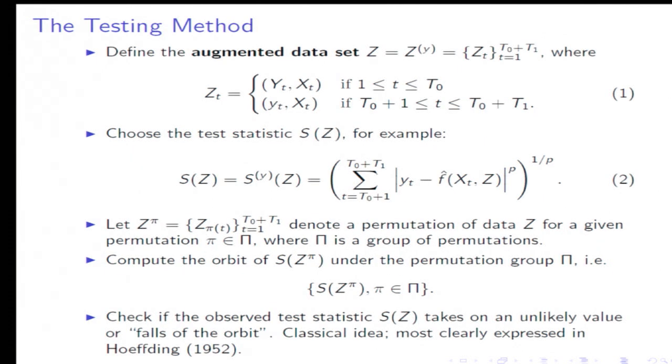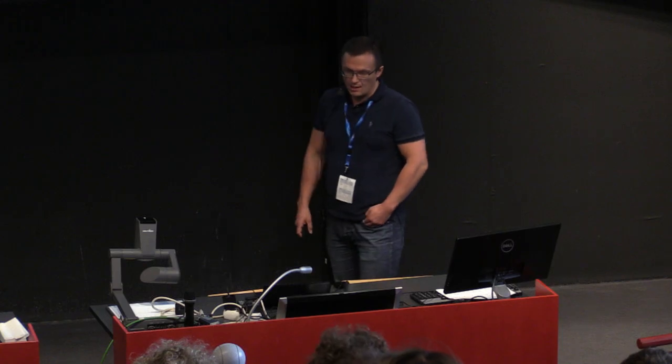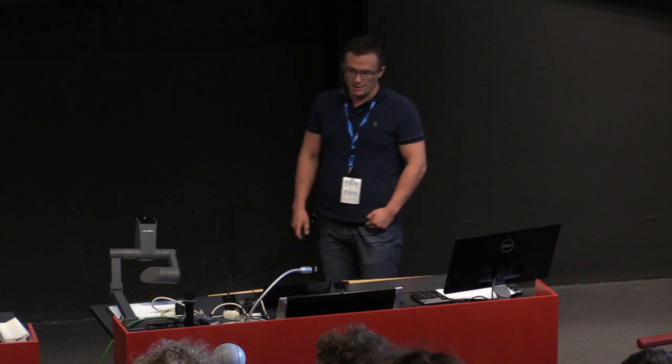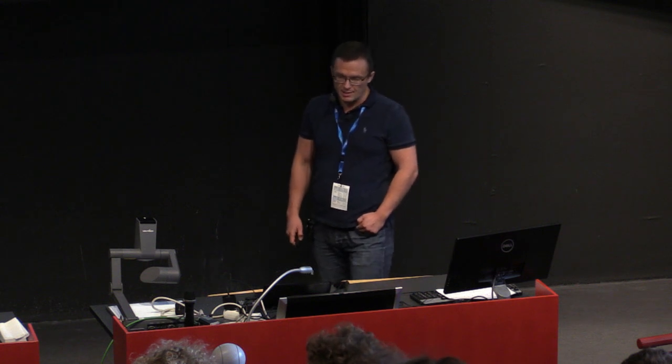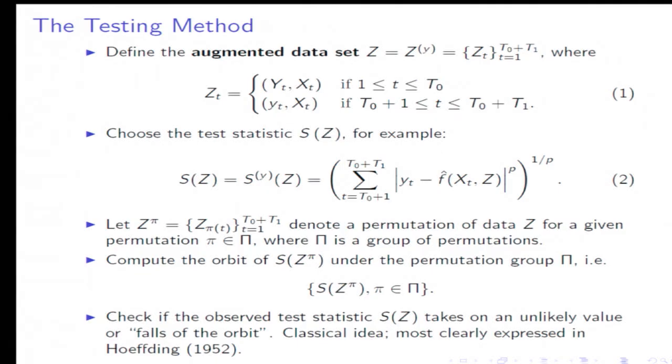More specifically, for each tested value, we're going to formulate an augmented data set that contains the current history as well as the hypothetical history for the future values. Then given this augmented data set, you formulate a test statistic called conformity score in this literature. Here it's going to be the hypothetical residual and you take the LP norm of these hypothetical residuals.